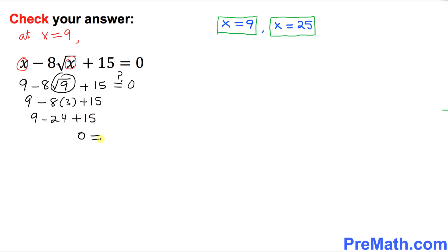And the right-hand side, 0. My question is, is this statement true? Yes, of course, indeed, this is true. So thus, that means this x equal to 9 is our answer that has been checked. It's a good solution.